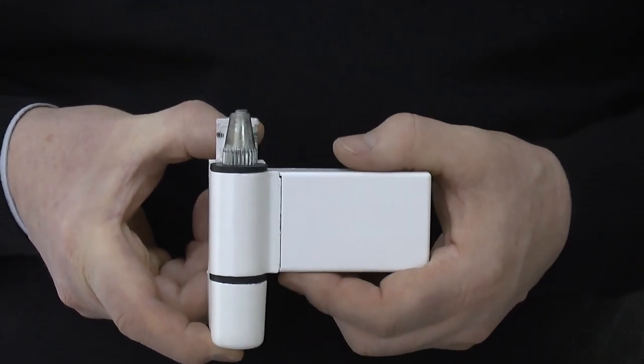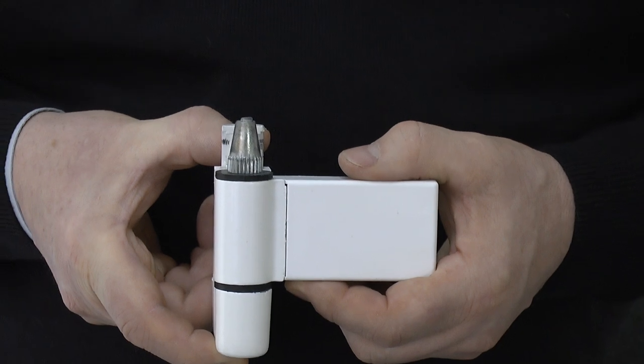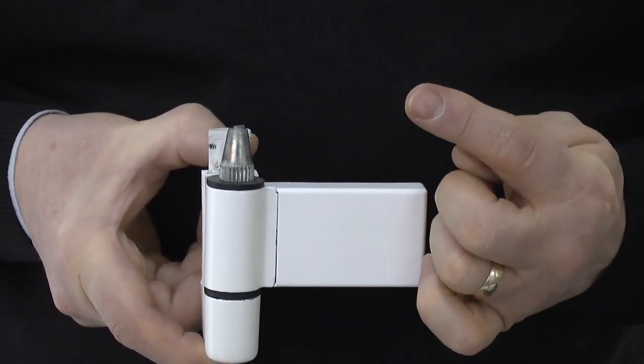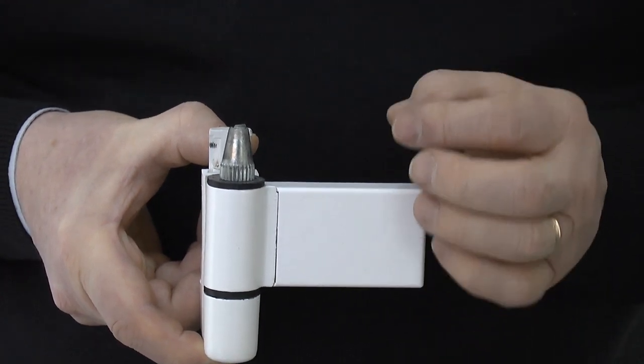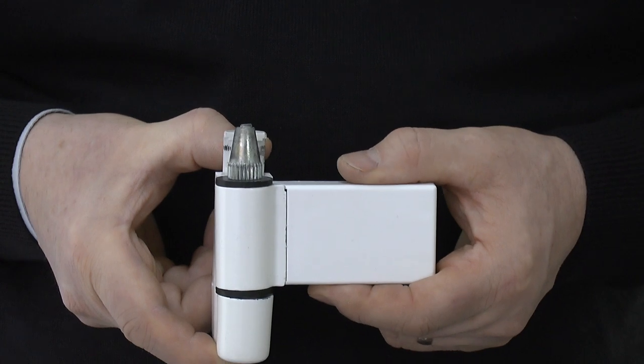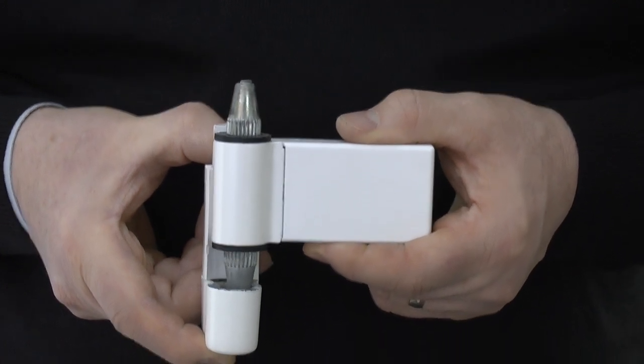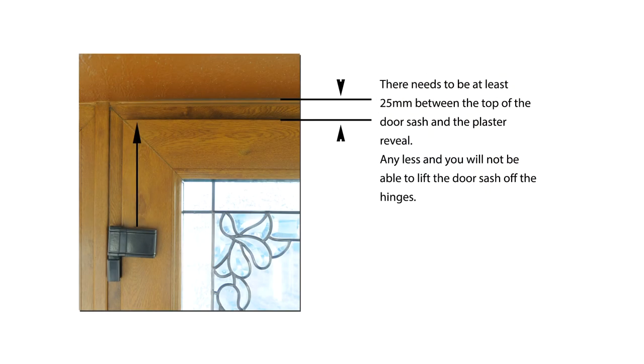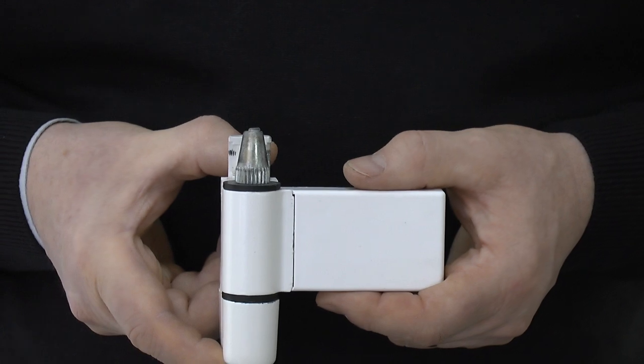You're going to need an allowance of at least 25 to 30 millimeters at the top of the door to release this from its hinge. As you lift it up, the stud at the bottom is anchored into the bottom of the hinge, so it's got to be able to clear.